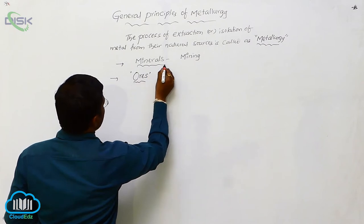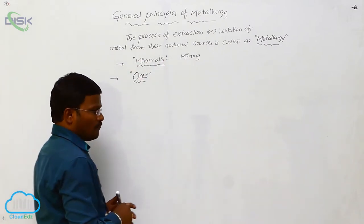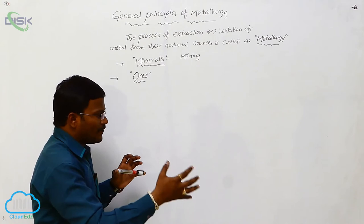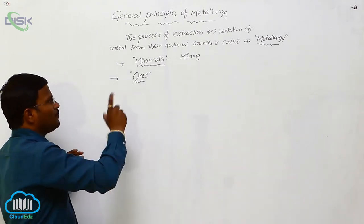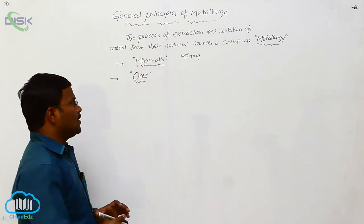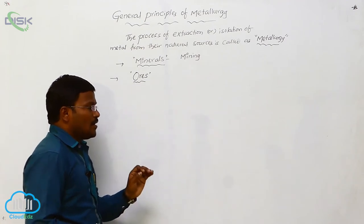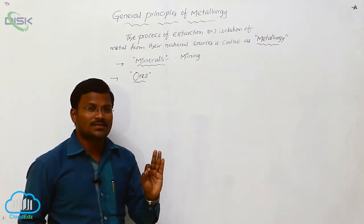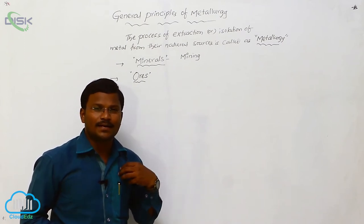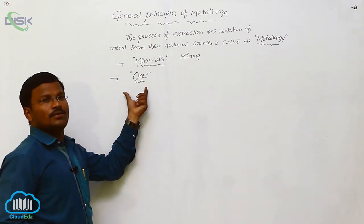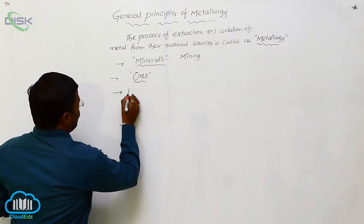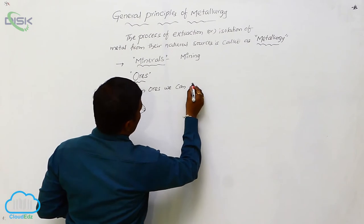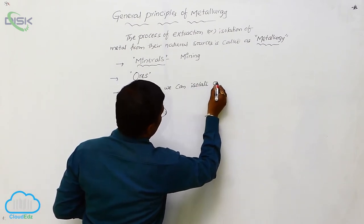The difference between minerals and ores is very small. Minerals are the naturally occurring combined forms of metals, obtained through mining. However, only some minerals are commercially and chemically useful to isolate our desired metal — such minerals are called ores. From ores, we can isolate our metal.